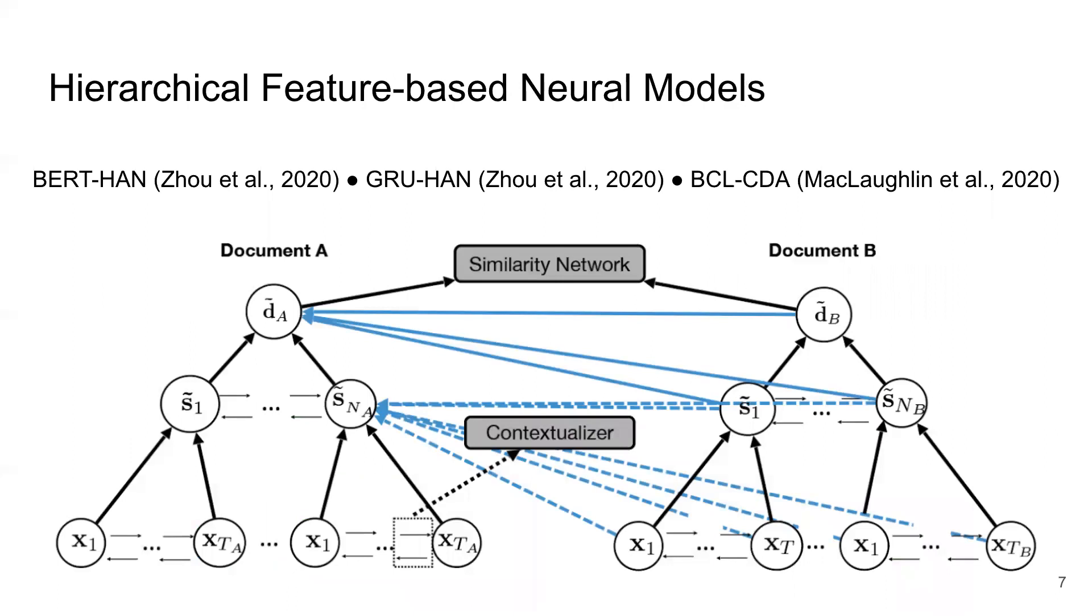Next, we test three hierarchical neural models from prior work. These models, much like the sentence BERT models, compute embeddings for each source or target sentence by pooling over token embeddings. However, instead of just computing the similarity between these pooled sentence embeddings, these models contextualize them using document-level LSTMs, and then have some sort of cross-document attention layer to compare the sentence representations between the two documents. Finally, they make a prediction for each target document sentence using these contextualized and attention-weighted representations.